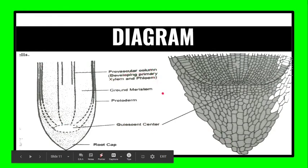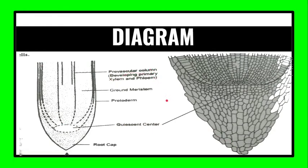So quiescent center acts as the reservoir of initial cells producing the cells. There is a diagram relating to the quiescent center and we can clearly see the cells of quiescent center which are inactive and that is the reservoir of initial cells.